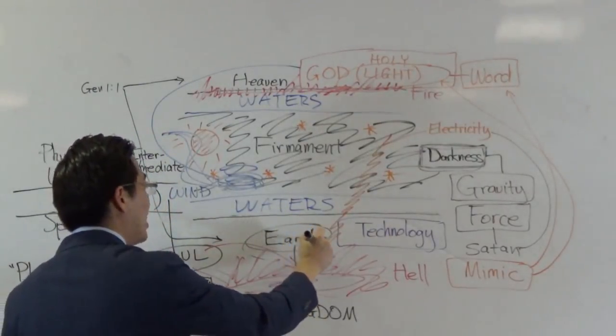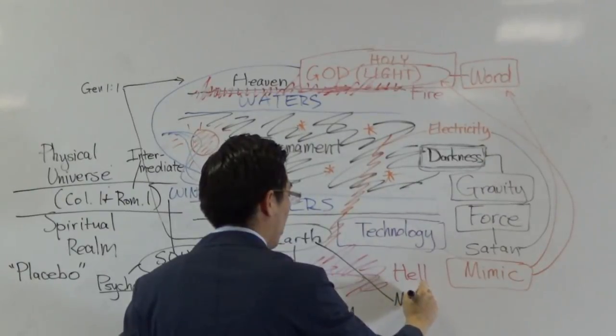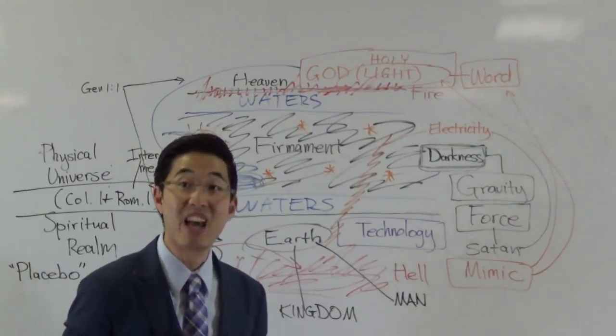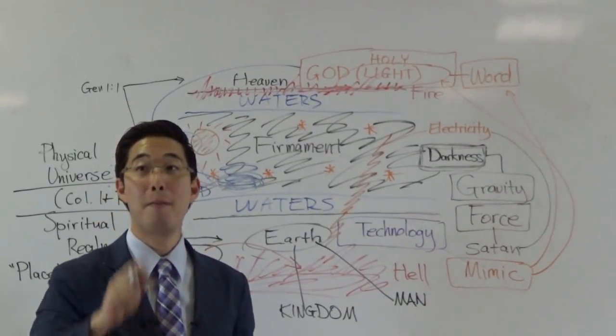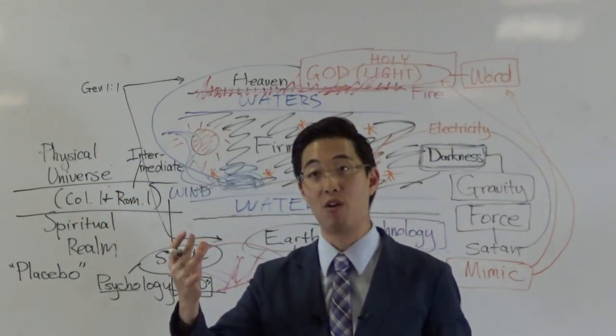But here's the thing. Man is created from what? The earth. So was it Lucifer or man who ruled the earth when God, as soon as God created the earth? Who was it that ruled? Man. Adam and Eve. Adam was created from the dust of the ground earth.